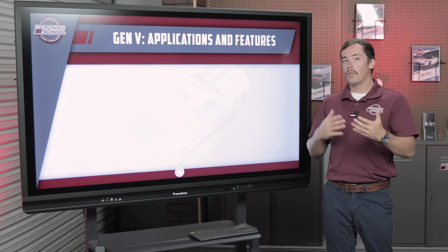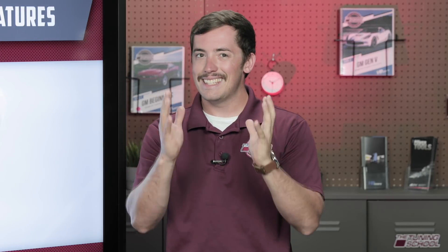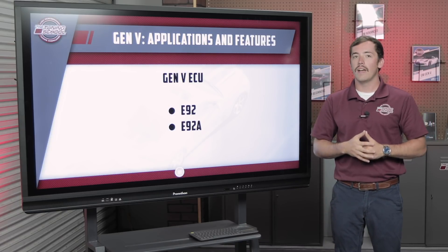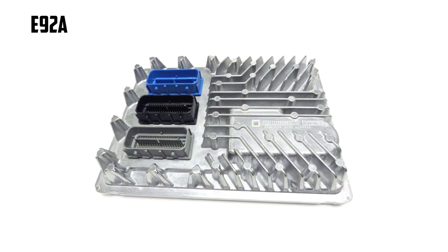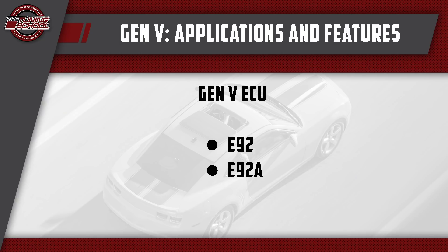As far as Gen 5 applications specifically, you're looking at anything that's an LT1 or an LT4. The timing varies by vehicle — trucks started in about 2014-2015, Camaros didn't follow suit until around 2016-2017, and Corvettes were earlier, alongside the trucks. The easiest delineation is: if it's an LT1 or LT4, it's going to be a Gen 5. The computers associated with those engines are the E92 or E92A. The E92 was the first revision for all LT1s and LT4s, and as you get into newer years — 2017 and up — they're all E92As. Those are your two computers that will have these torque-based systems.